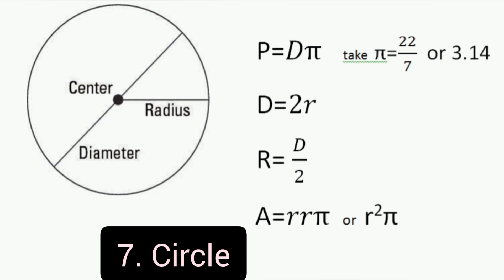Diameter is equal to 2 times the radius, while radius is equal to diameter divided by 2. Area of circle is equal to radius times radius times pi, or radius squared times pi.